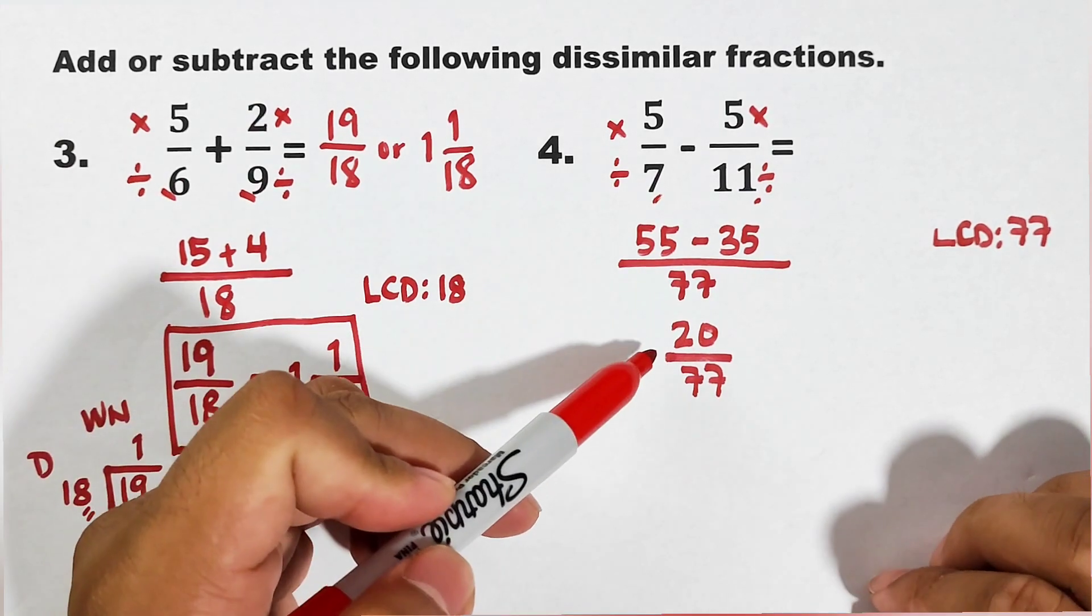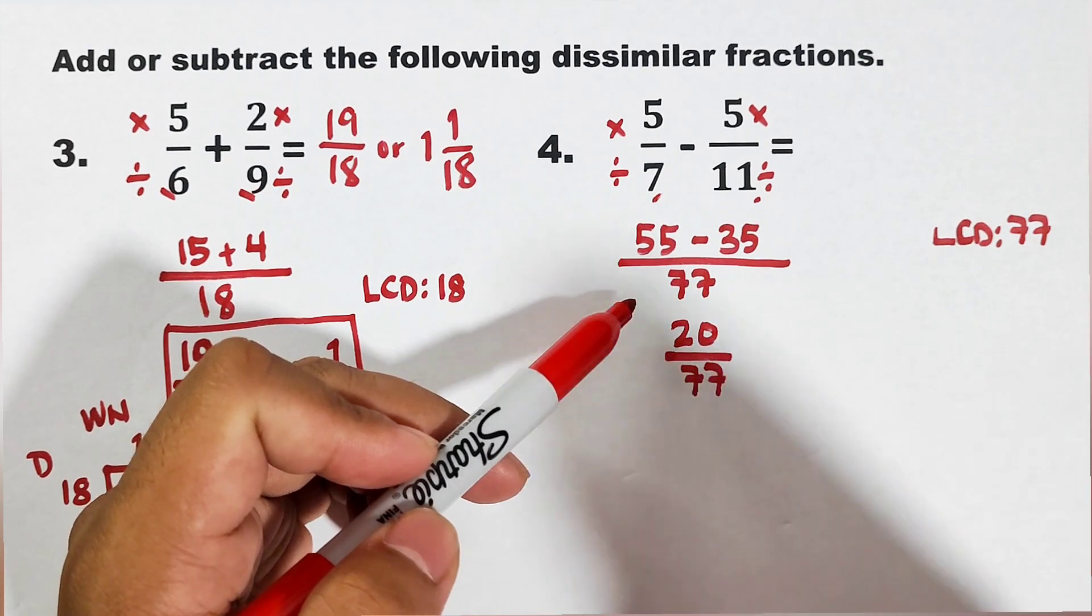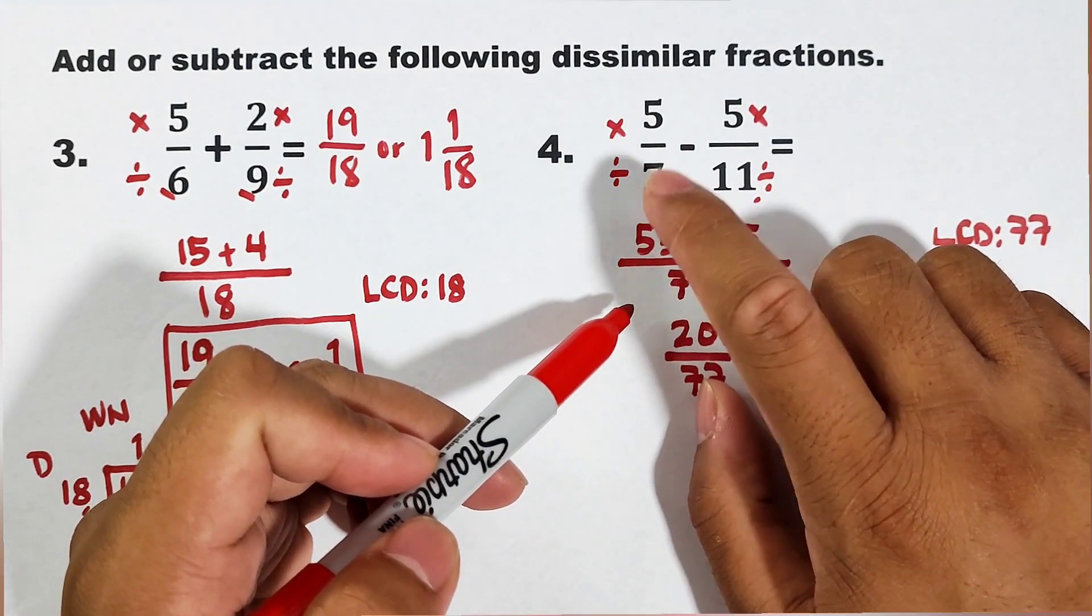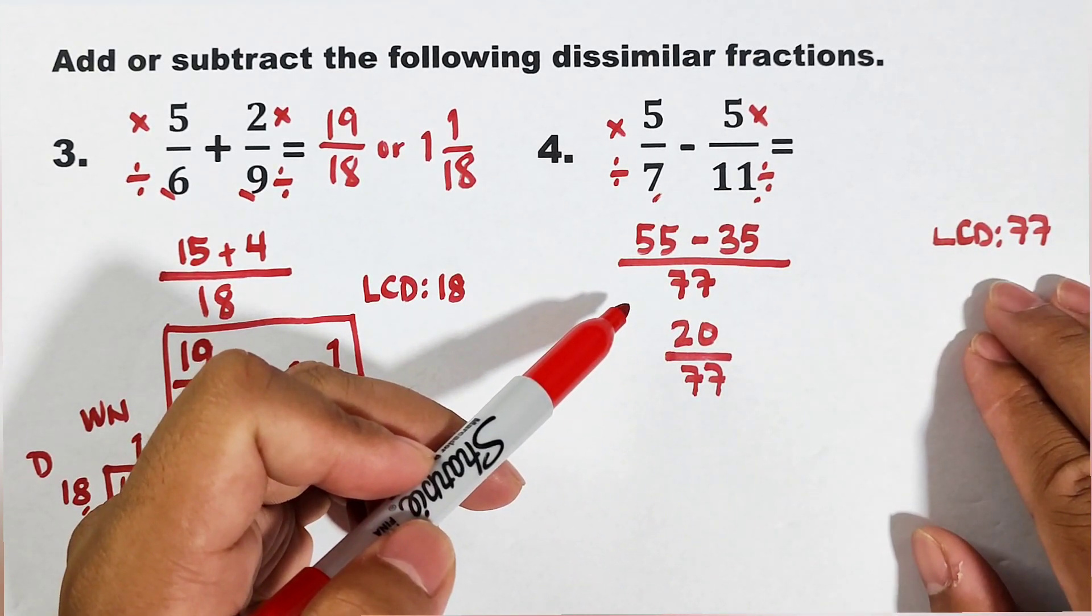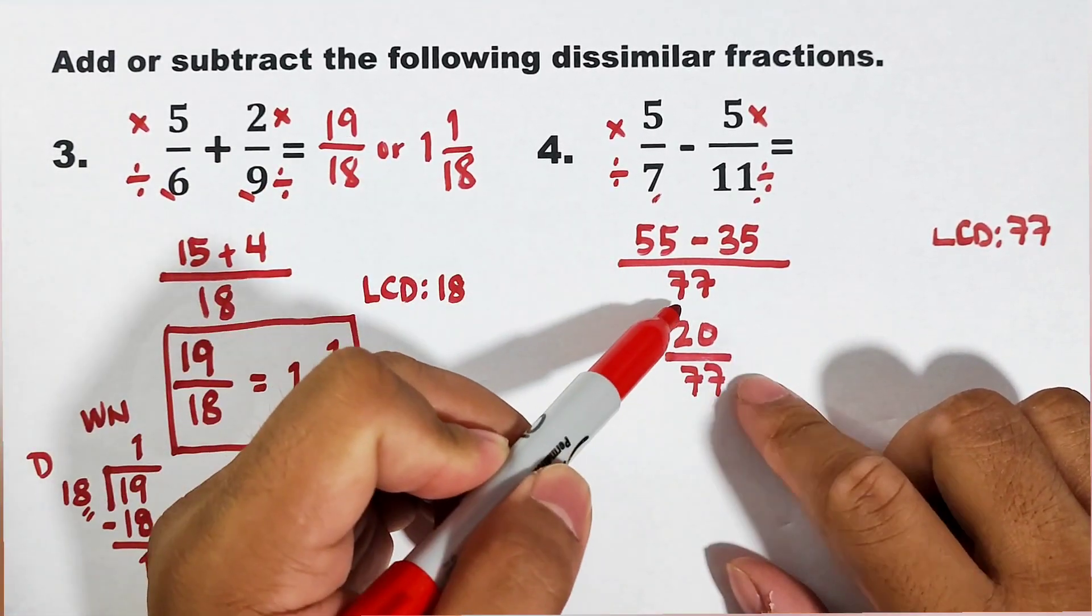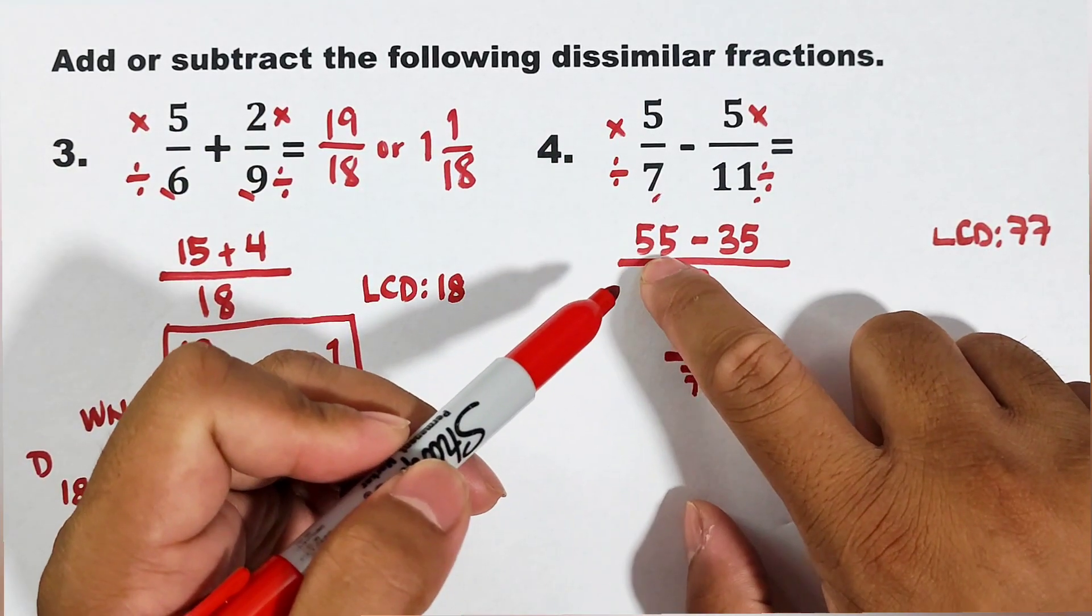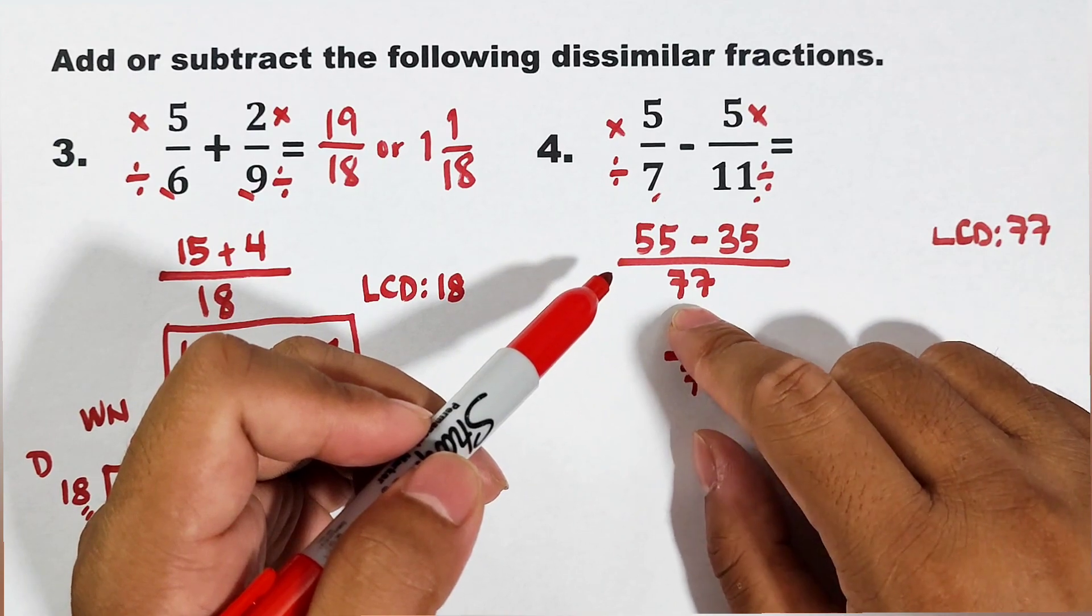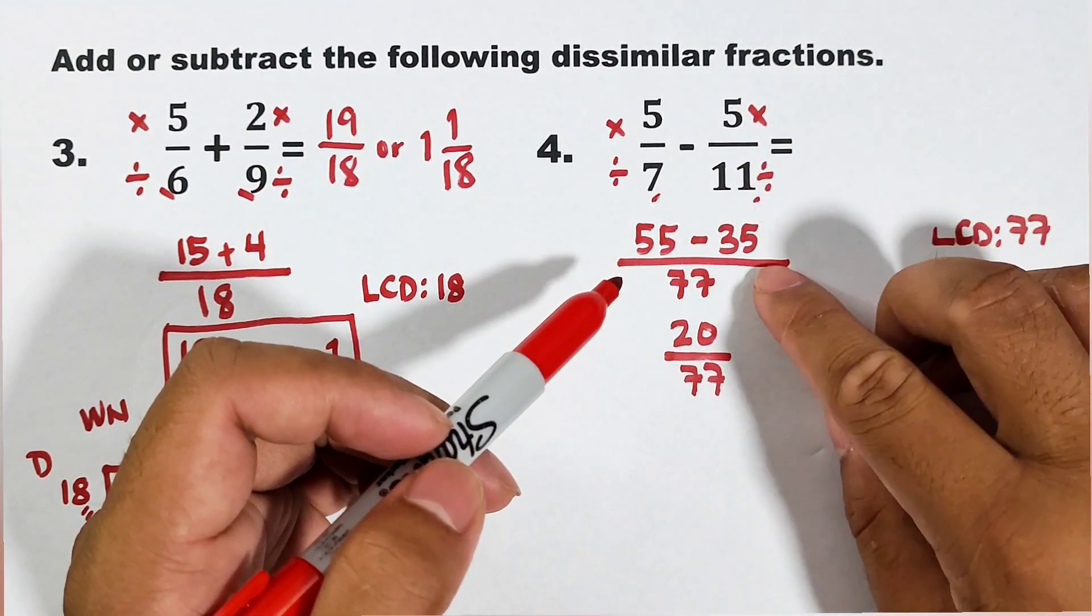So, what we have here in number 4, nagawa na yung solution niya because nacut yung ating video. So, what we have here is that we have our denominators as 7 and 11. So, our LCD is 77. Now, place it here. Don't forget to divide and multiply. 77 divided by 7 is 11 times 5. The product is 55 minus 77 divided by 11. That will be 7 times 5. That is 35.